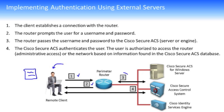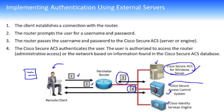The perimeter router passes this information in step three to our Cisco ACS server. Notice there are other options we could utilize, including an access control system physical appliance, but the most common is to have the ACS implemented on a Windows server system — running as software on top of Windows, by far the most common implementation. This device checks its database and confirms the user is valid. In step four, it returns this information to the perimeter router, which in turn allows that remote client onto the network — or maybe allows an administrator to configure the perimeter router.